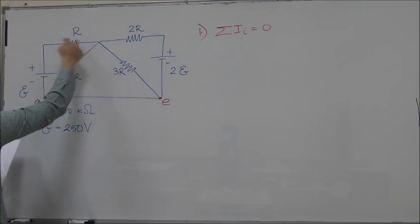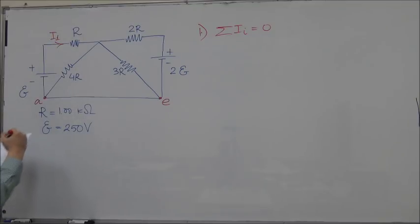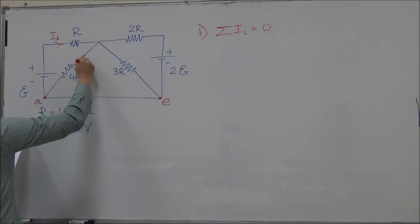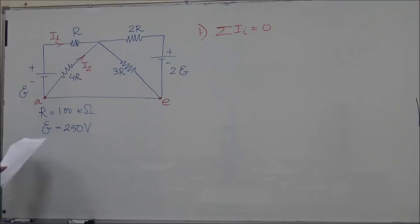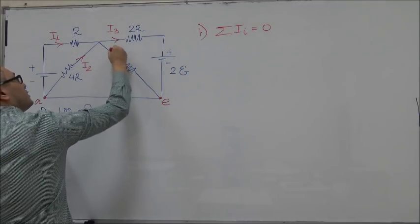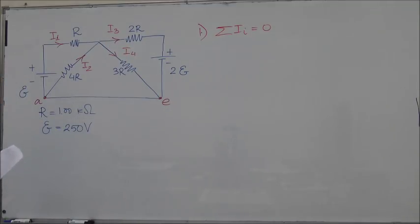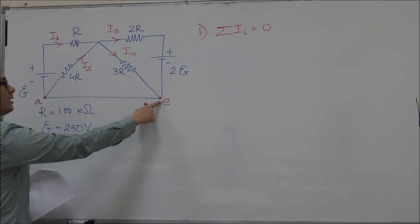I decide to choose it like this: the current in this part is flowing this way and I'm going to call it I1, the current flowing here is I2, the current flowing here is I3, and this one would be I4.